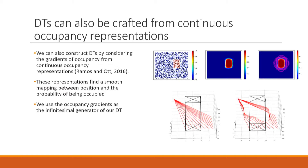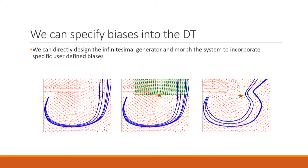We can also specify biases into the diffeomorphic template by directly designing the infinitesimal generator to morph the system. For example, we have a system that draws out the letter J and we wish to morph it towards some specified points shown by the red star — and we see that we can actually do that.